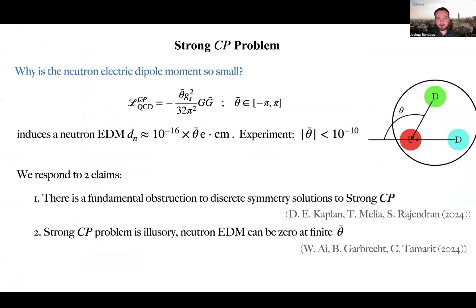This term for generic values of theta bar violates CP and induces an electric dipole moment for the neutron, proportional to theta bar. Experiment constrains theta bar to be consistent with zero to one part in 10 billion, and this is the problem: why is this a priori order one number, theta bar, apparently consistent with zero?